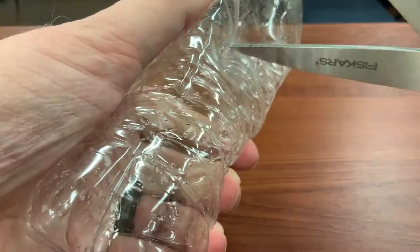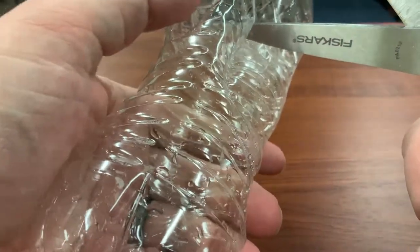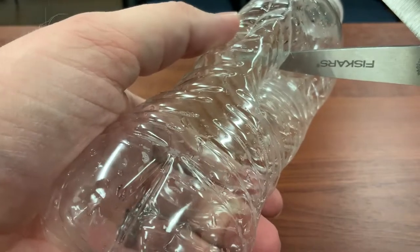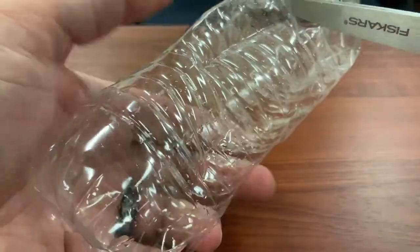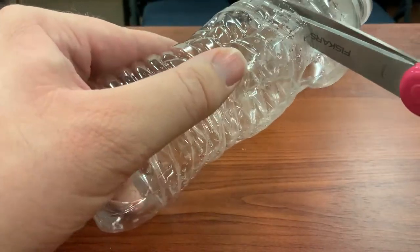First thing you want to do is make sure you're watching your hands. You do not want to accidentally punch through and get your hands. So make sure your hands are way down away from it while you're punching through.